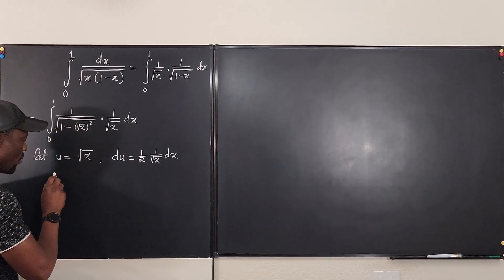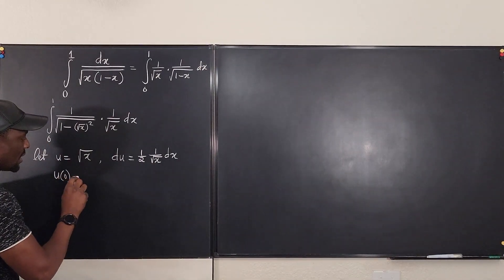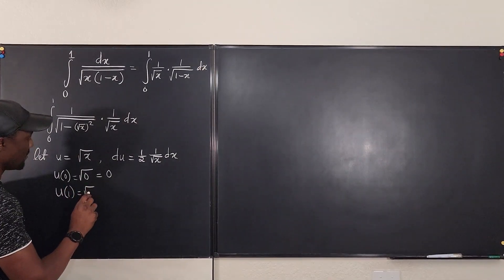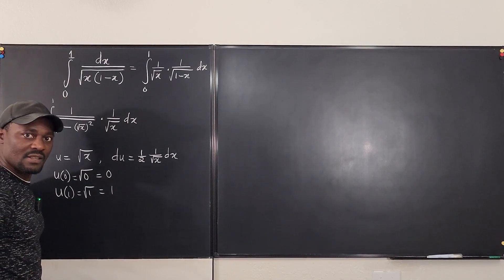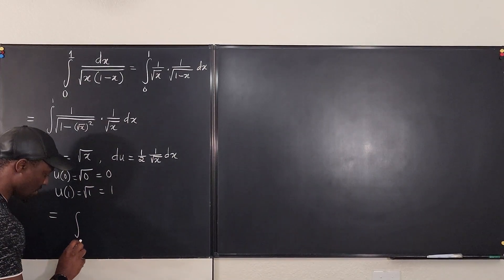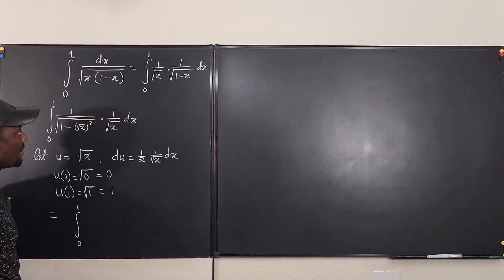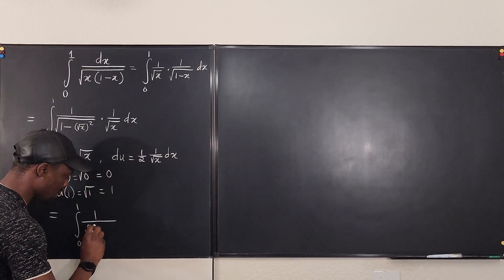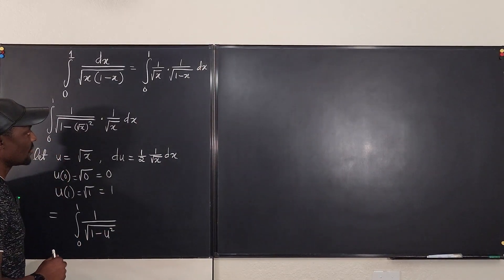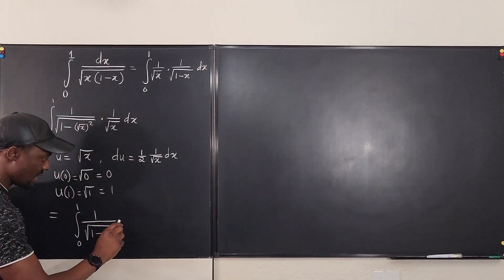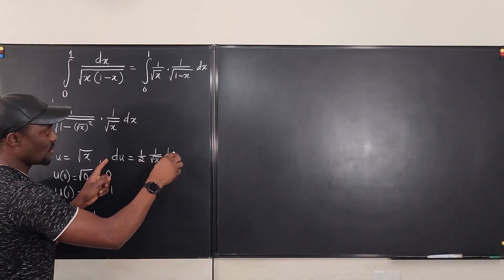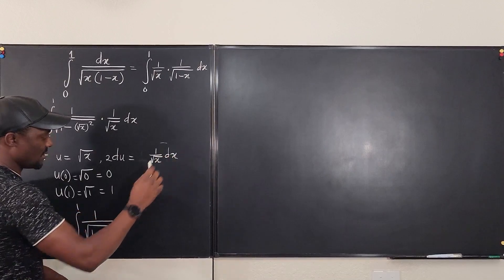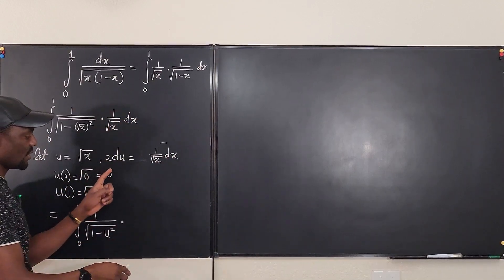Because this is a definite integral, I need the value of u at the bounds. When u is evaluated at zero, it's the square root of zero, which is zero. When evaluated at one, it's the square root of one, which equals one — so nothing changes. Multiplying both sides by 2, I get 2 du equals 1 over the square root of x times dx, so I replace 1 over the square root of x dx with 2 du. The substitution u replaces the square root of x in the remaining factor.